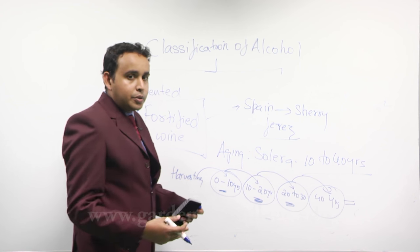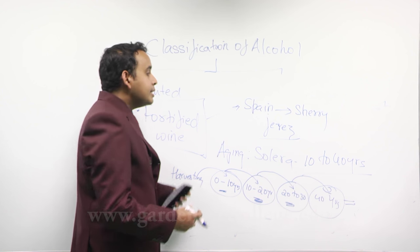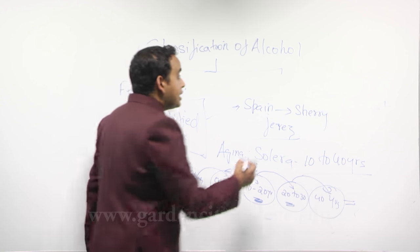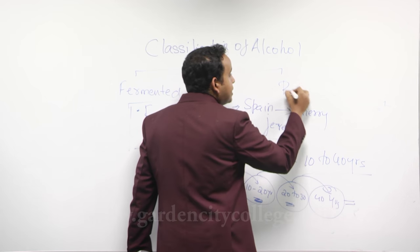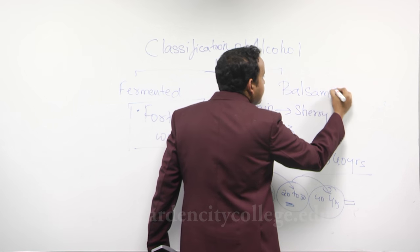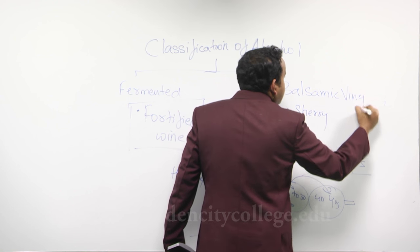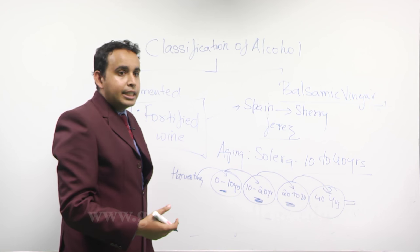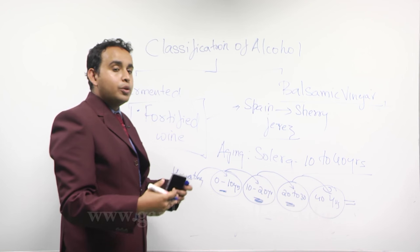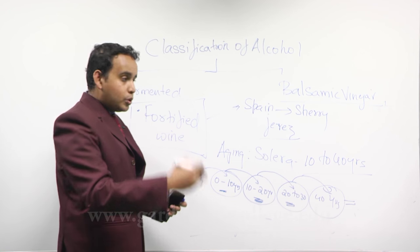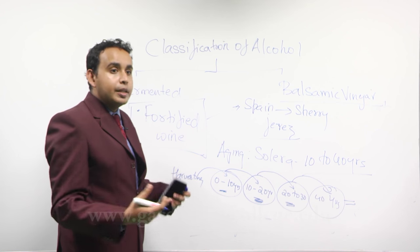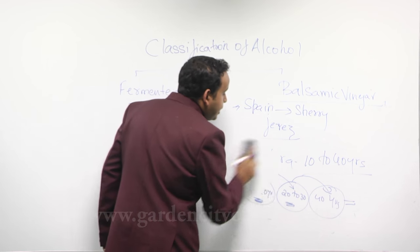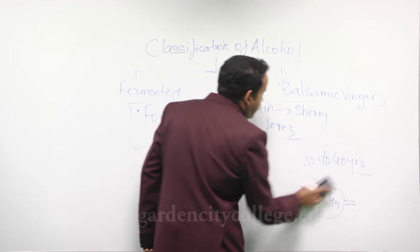This same solera-style aging process is also used for balsamic vinegar — it goes through the same process of aging in barrels and gets better over time, gaining the flavor of wood from the barrels.